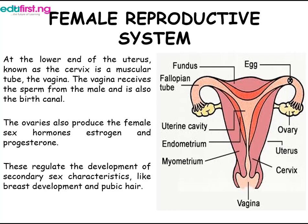At birth, all of the potential eggs of ovulation are present in mature form. Usually, only one egg is released at the time of each ovulation. The ovaries also produce the female sex hormones estrogen and progesterone. These regulate the development of secondary sex characteristics like breast development and pubic hair. The hormones also have a coordinating role in the menstrual cycle.